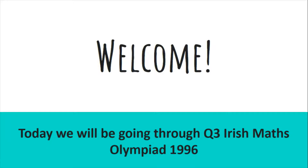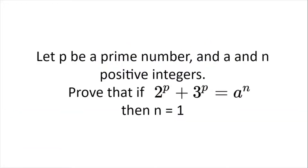Welcome! Today we'll be going through question 3 from the Irish Maths Olympiad 1996. Let p be a prime number and a and n be positive integers. Prove that if 2 to the power of p plus 3 to the power of p is equal to a to the power of n, then n is equal to 1.